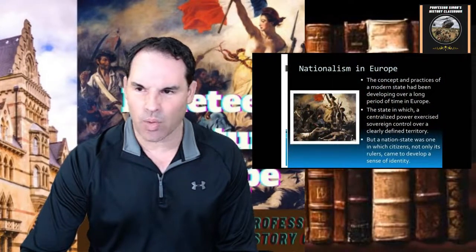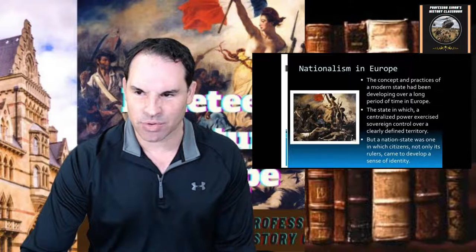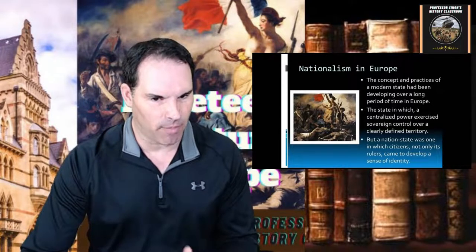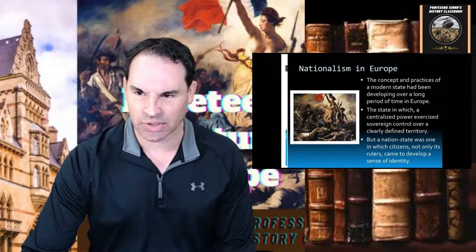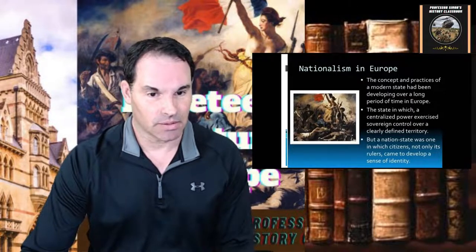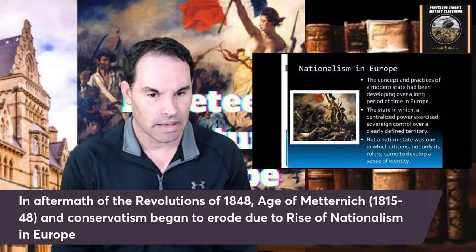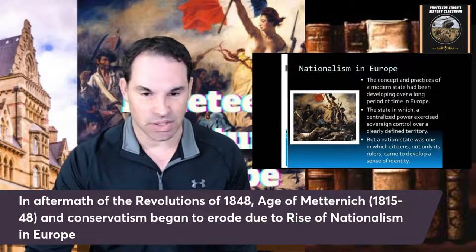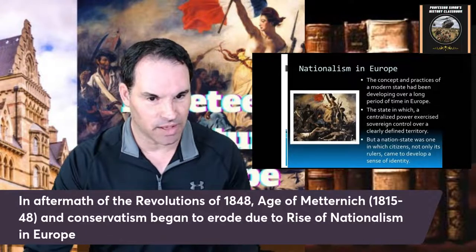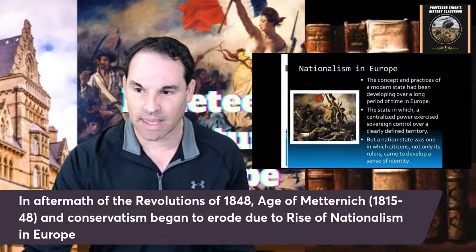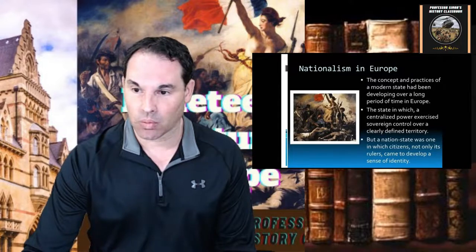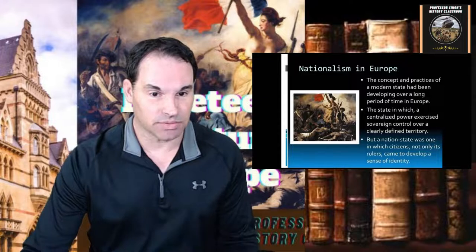Nationalism was a major event that really changed Europe drastically — the map of Europe was pretty much changed later. A lot of this came in the aftermath of the revolutions of 1848. You had the age of Metternich, where Clemens von Metternich with the Congress of Vienna tried to keep conservatism stable in Europe. But that gets eroded by the rise of nationalism, which really takes off, and they think it was a major cause of why World War I and later World War II happened as well.